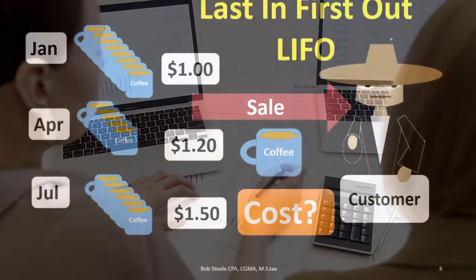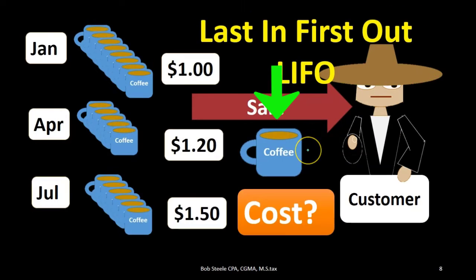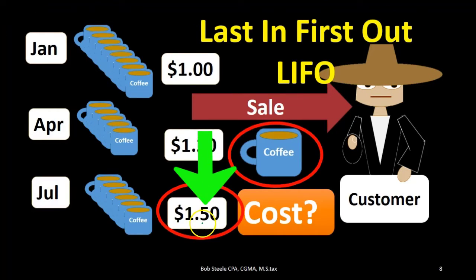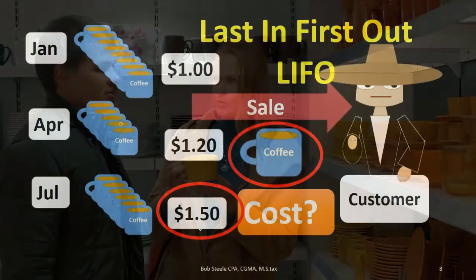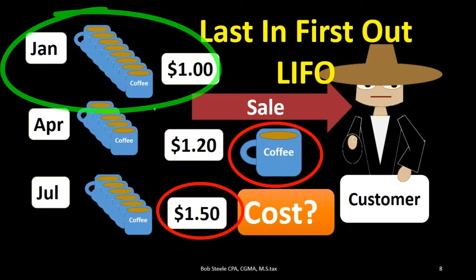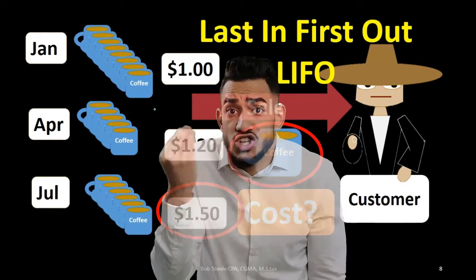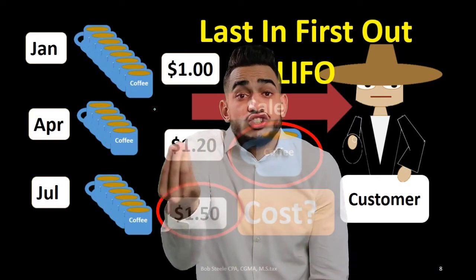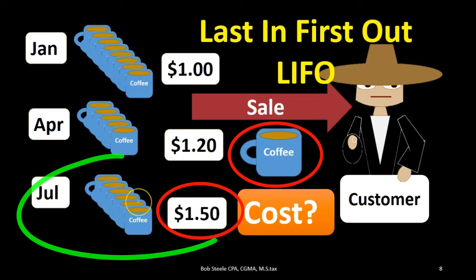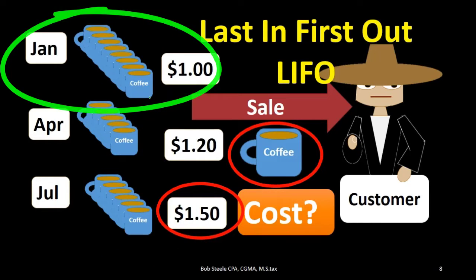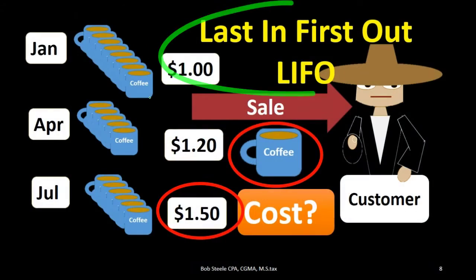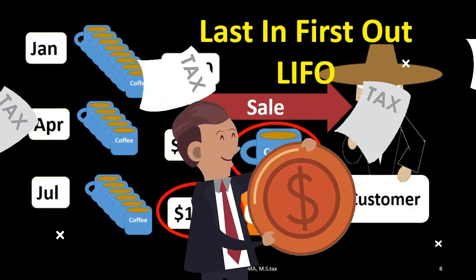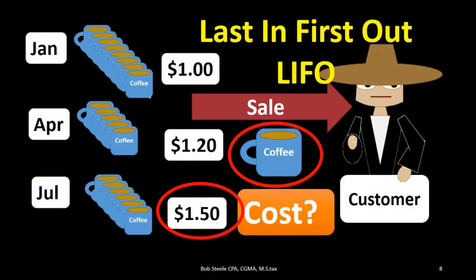We could make another assumption — last in first out — where we assume the coffee mug we sold was taken from the last batch we bought, the most expensive one at $1.50. Most people balk at this and say it doesn't make sense to sell the newest ones first, but you can make a reasonable argument: if it's just an estimate, it's as reasonable to assume a mug from the last batch was sold. In terms of rising prices, this method actually reduces net income, which may be desirable for tax purposes.